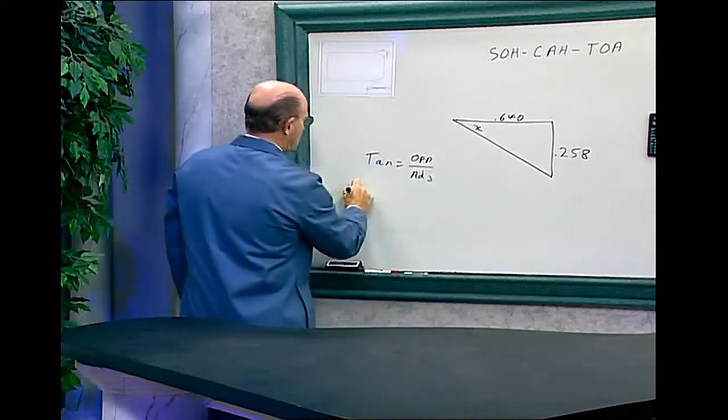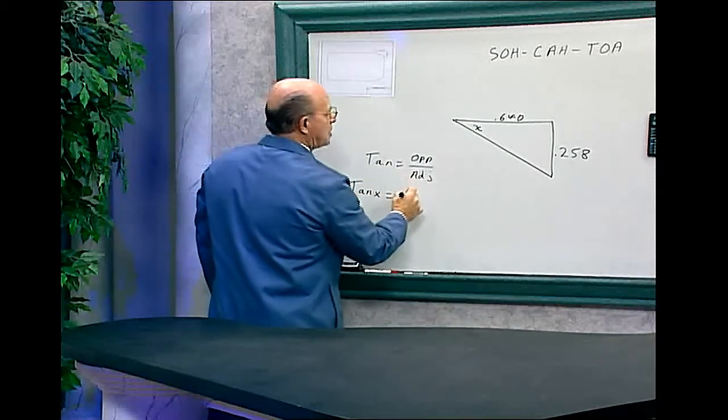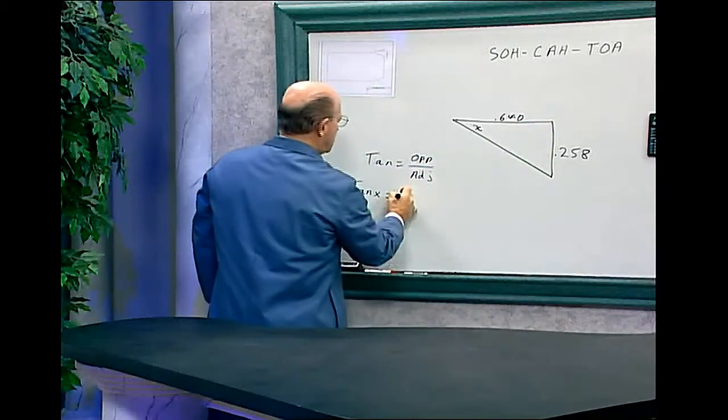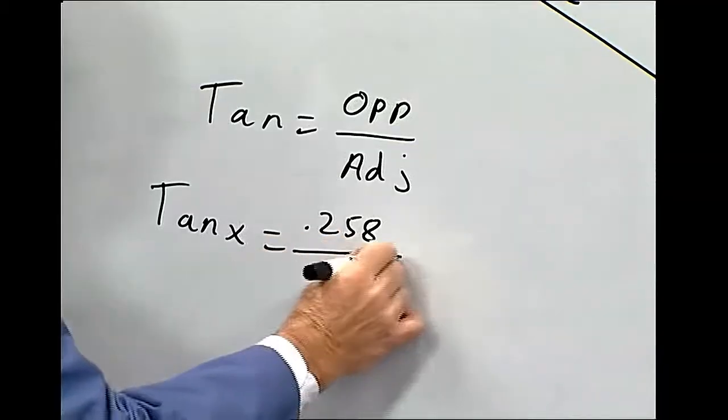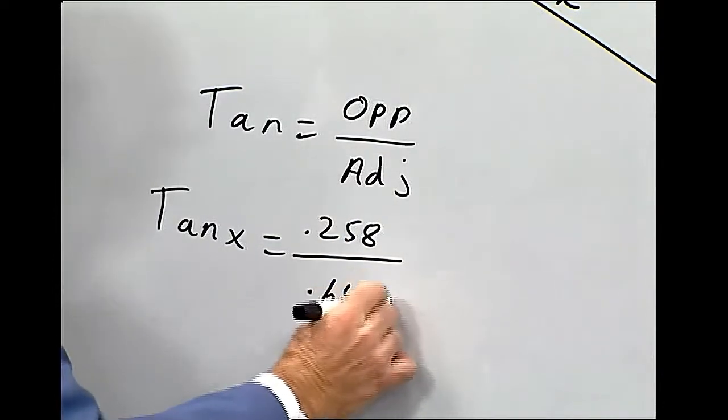So tangent X equals opposite and that would be the opposite side is 0.258 divided by 0.640.